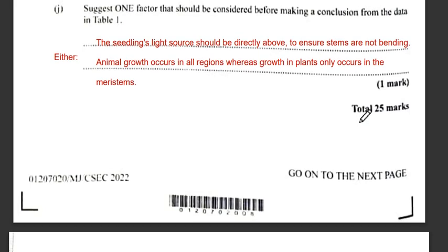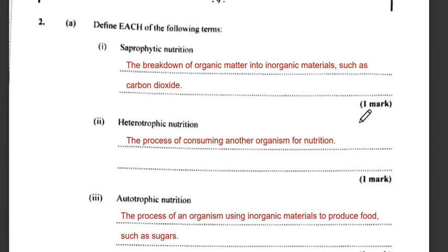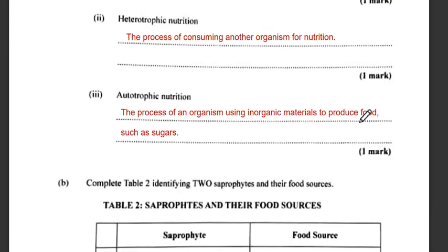Moving to question 2 — define each of the following terms. Saprophytic nutrition is the breakdown of organic matter into inorganic matter, such as carbon dioxide. Heterotrophic nutrition is the process of consuming another organism for nutrition. Autotrophic nutrition is the process of organisms using inorganic matter to produce food, such as sugar.